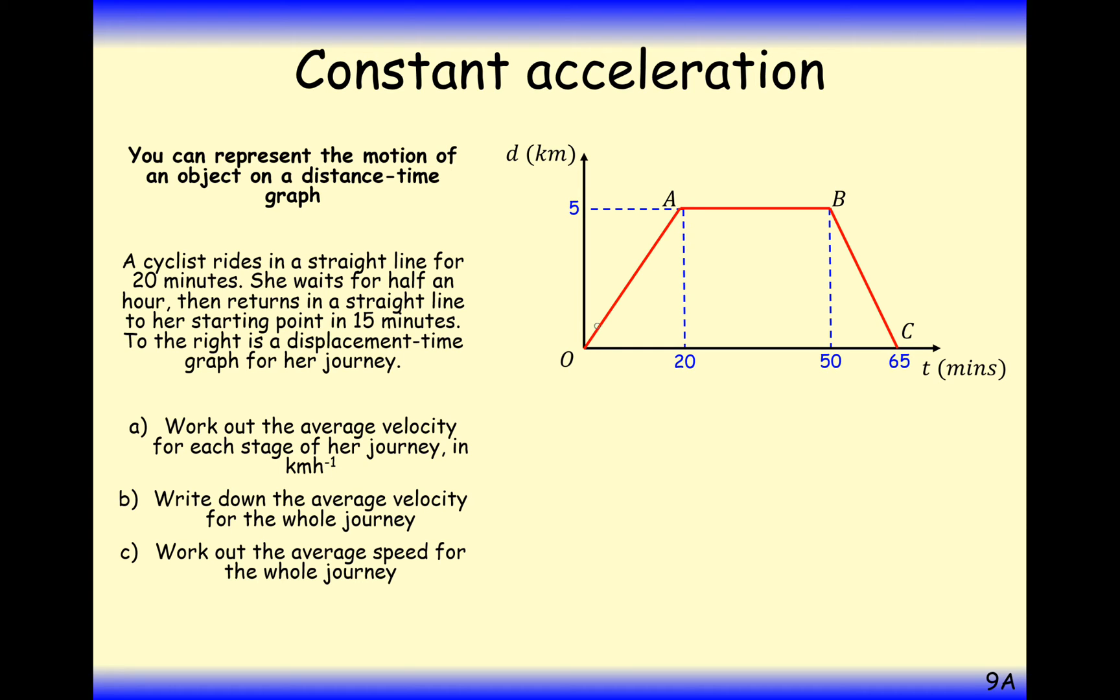For the first part, the velocity is the gradient, so it's change in y divided by change in x. In this case it's distance divided by time. Because we're in minutes and we want velocity in kilometers per hour, 20 minutes is effectively a third of an hour. So it's five, the distance, divided by a third, which is 15 kilometers an hour. You can think of this as a formula of velocity equals distance divided by time, and I'm sure you've seen that before at GCSE.